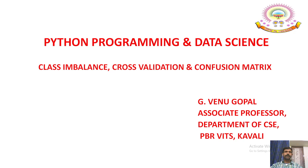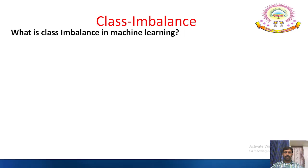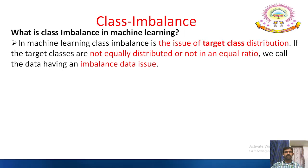What is class imbalance in machine learning? In machine learning, class imbalance is the issue of target class distribution. If the target classes are not equally distributed or not in equal ratio, we call the data as having an imbalance data issue. There is a problem in the result analyzed by the machine learning algorithm, and that is called class imbalance.